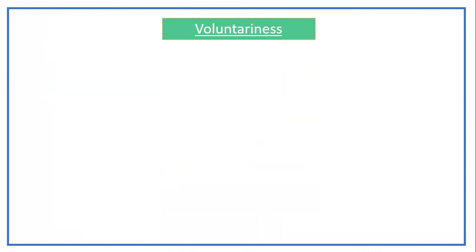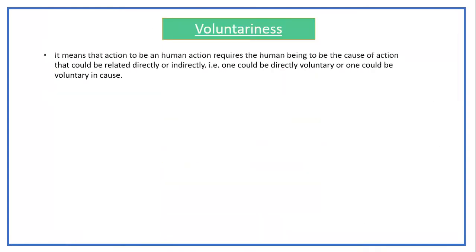The second criterion is voluntariness. It means that for an action to be a human action, the human being must be the cause of the action, either directly or indirectly. That is, one could be directly voluntary or voluntary in cause. For example, if you are going outside, you are directly voluntary — you are voluntarily choosing to do it.